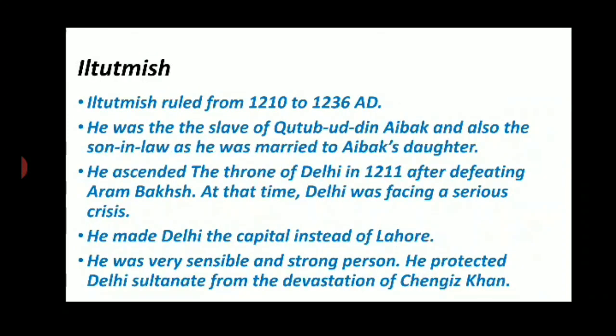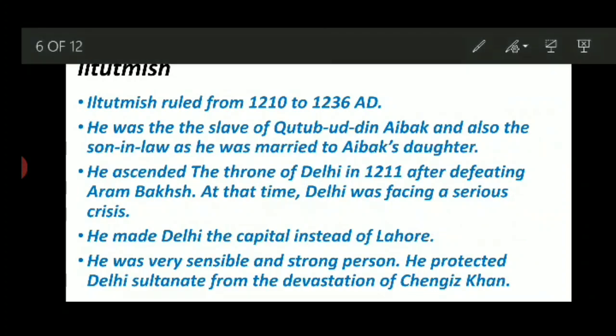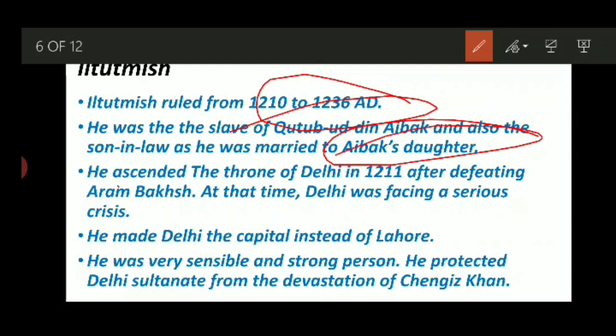After the death of Qutubuddin Aibak, Il-Tutmish — the slave and the son-in-law of Aibak — came to the throne. His full name was Shamsuddin Il-Tutmish, and he ruled from 1210 to 1236 AD. He was the slave of Qutubuddin Aibak and also the son-in-law, as he was married to Aibak's daughter. Initially he was just a slave, but when Aibak got impressed by him, he got his daughter married to Il-Tutmish.